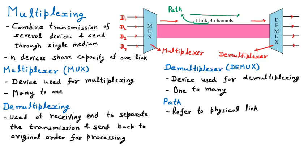The next important concept is the channel. In the diagram, four channels are mentioned within this single pipe. The path is only one physical link, but there are four data streams moving through it — these are four channels. Each channel carries a specific device's data: D1, D2, D3, and D4. So four data streams can pass together, meaning four channels are present.